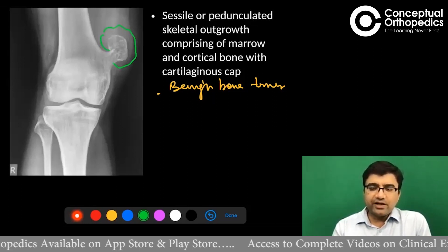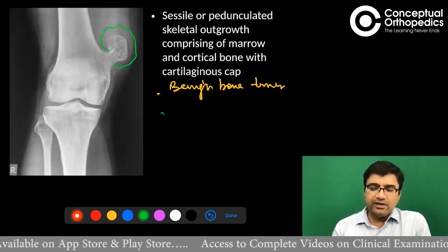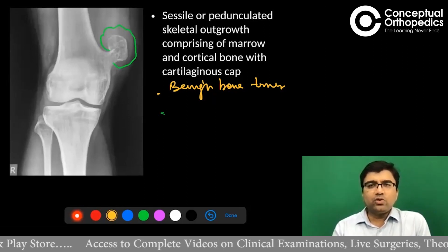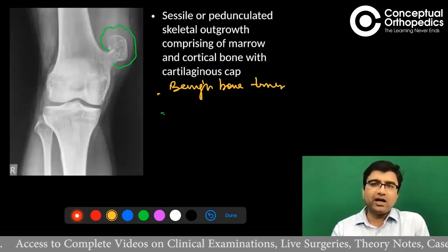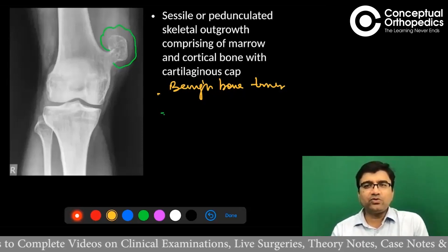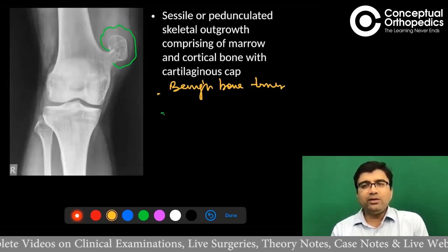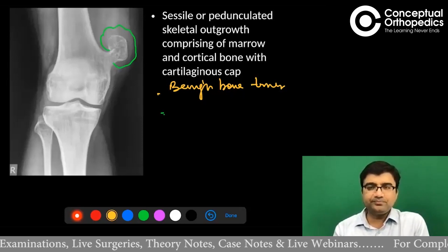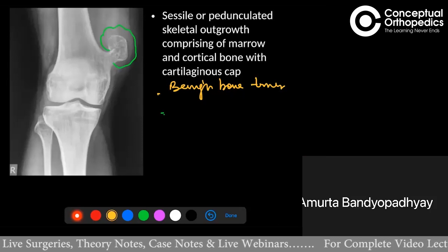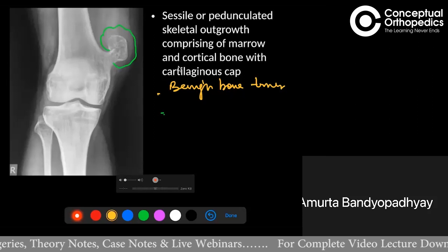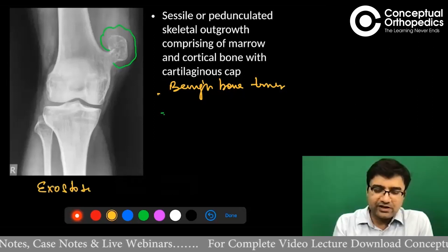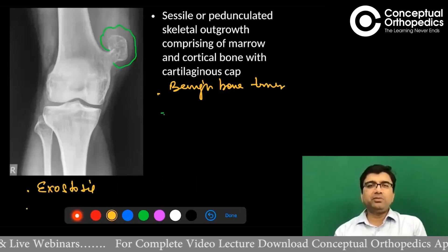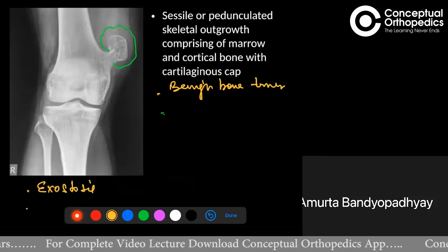Normally, which age group is affected? Let us first see what are the different names by which it is known. I would like to keep it interactive — can anyone tell me the other names by which we call osteochondroma? A student answered: exostosis. Correct! And if it is multiple? Multiple hereditary exostosis.